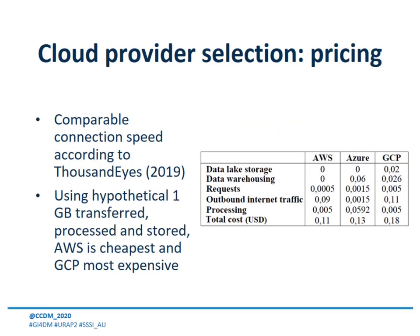According to the ThousandEyes Cloud Performance Benchmark, all of the providers we assessed gave comparable connection speeds and qualities to Africa. This left us with only pricing to distinguish the three. We used the assumption of a hypothetical scenario where one gigabyte was entered into the system, processed, and then stored for a month — similar to what we tested the system with. Our end dataset was 1,046 megabytes, just more than a gigabyte. As you can see in the table, AWS is the cheapest at 11 cents, Azure is next at 13 cents, and GCP is at 18 cents in US dollars. Therefore, we decided to move forward with AWS as our chosen cloud platform.